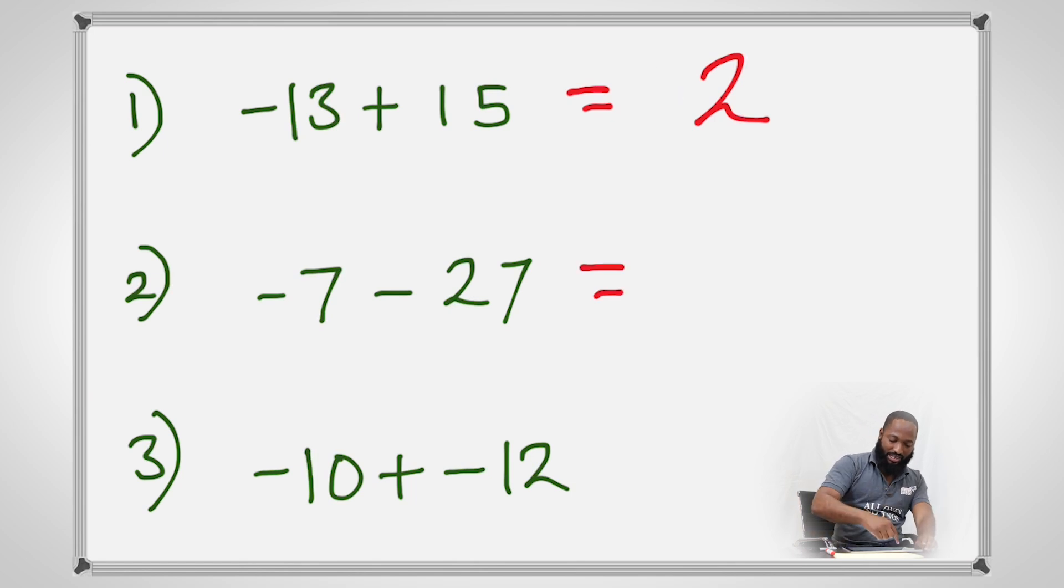Negative seven minus 27 - signs are the same, so you actually add. You owe seven, and then you owe 27 more, so you actually add. Seven and 27 is 34, and you put back the sign. So in all, you are now owing negative 34 - you are now owing 34.